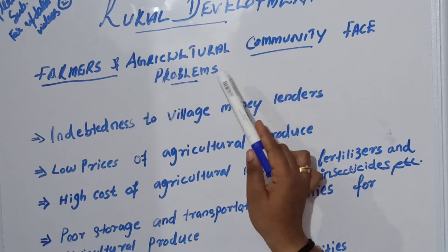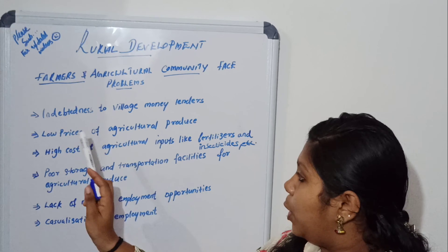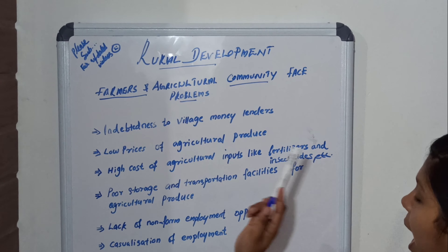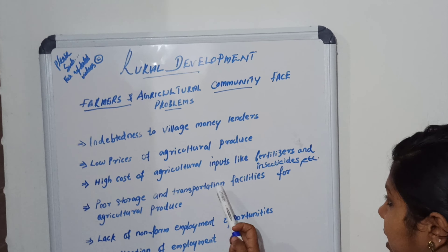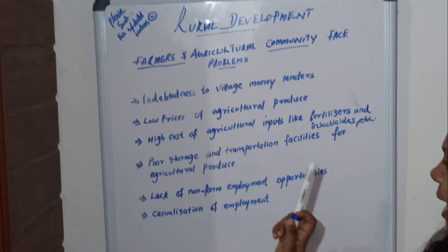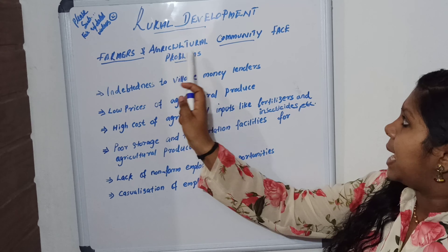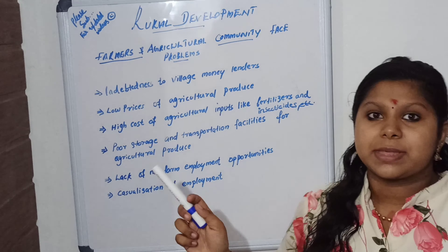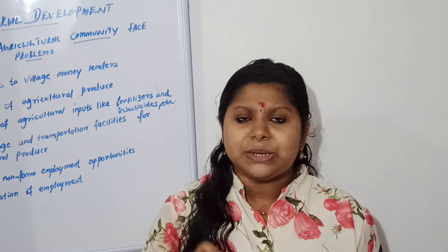I will say it one more time. The main points in farmers and agriculture community face problems are: dependence on village money lenders, low price of agriculture produce, high cost of agriculture inputs like fertilizers and insecticides, poor storage and transportation facility for agriculture produce, lack of non-farm employment opportunity, and casualization of employment. That's all for today. If you didn't see my first part video, please go ahead and see my video on Chinos Vlogs and Education. Thanks for watching my channel, love you all, keep supporting.